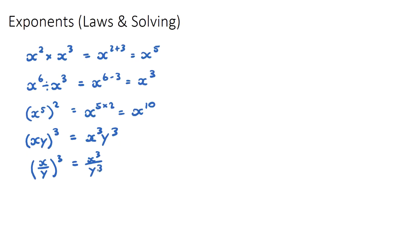A few more smaller rules. If we have x to the power of 0 — anything to the power of 0 — this is equal to 1. Whether it's x, a, 5, 10, or a million, anything to the power of 0 is 1. The caveat is that x cannot be 0 — any non-zero number to the power of 0 gives you 1.